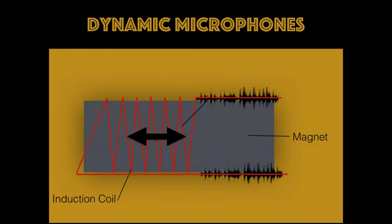An induction coil can sound like a daunting term. However, all this means is that it is a coil that, when reacting within a magnetic field, generates variable voltages in relation to the movement of the diaphragm. This is how a moving coil microphone translates sound pressure to an electrical signal.